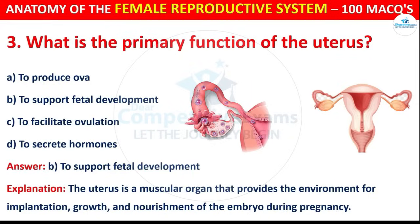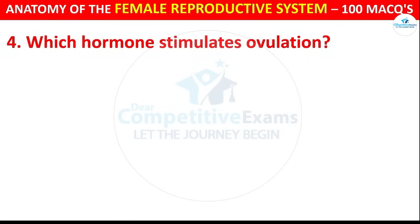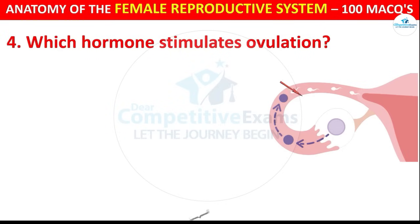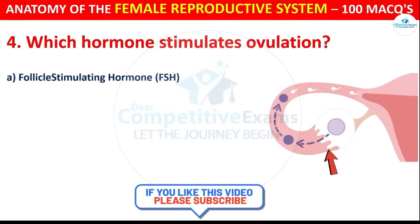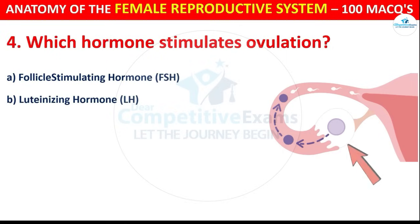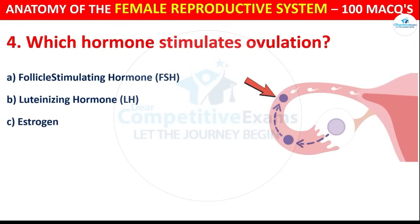Question number 4: Which hormone stimulates ovulation? Your options are: Follicle Stimulating Hormone (FSH), Luteinizing Hormone (LH), Estrogen, or Progesterone.